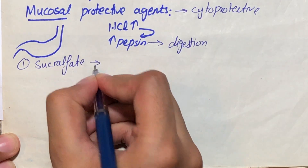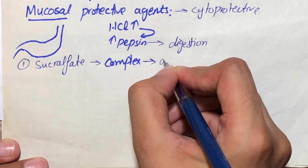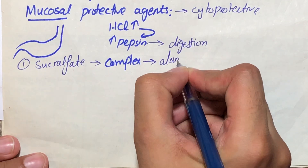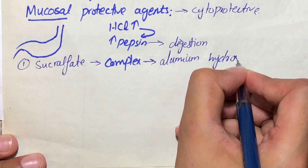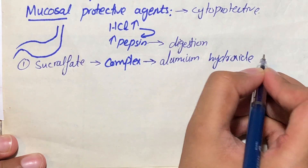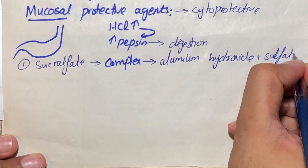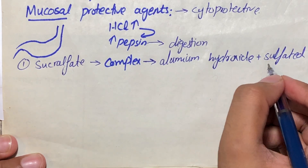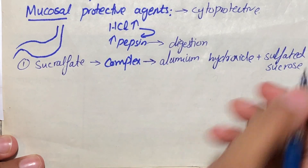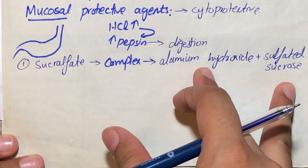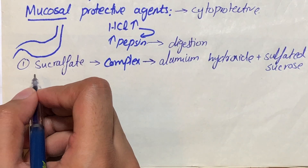Sucralfate is actually a complex of two compounds: aluminium hydroxide and sulfated sugar sucrose. So it is a complex of these two compounds.